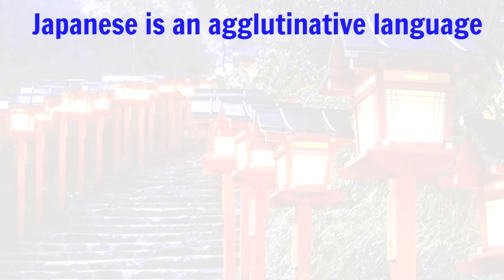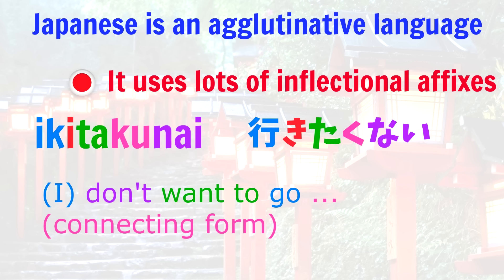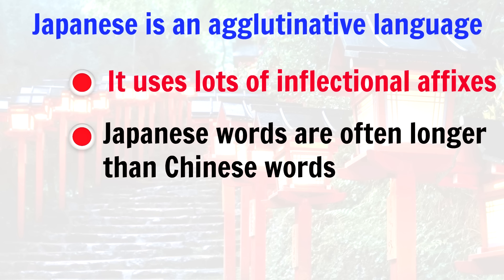Japanese, on the other hand, is an agglutinative language that uses inflection. Agglutinative languages use a lot of affixes. Rather than just placing independent words side by side, you attach additional pieces to words to add or modify meaning. This kind of inflection in Japanese means that Japanese words are often longer than Chinese words, and that it may take a few words in Chinese to translate one Japanese word.